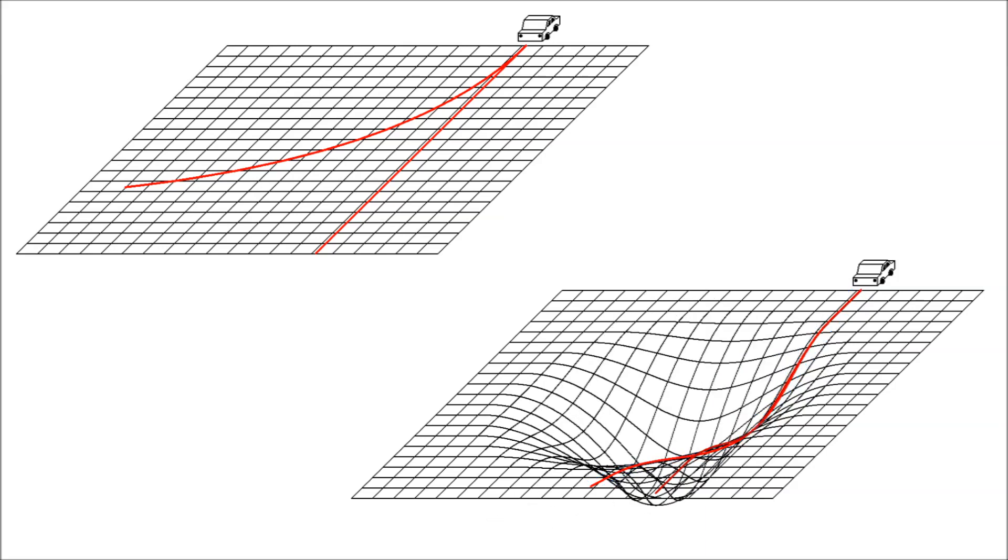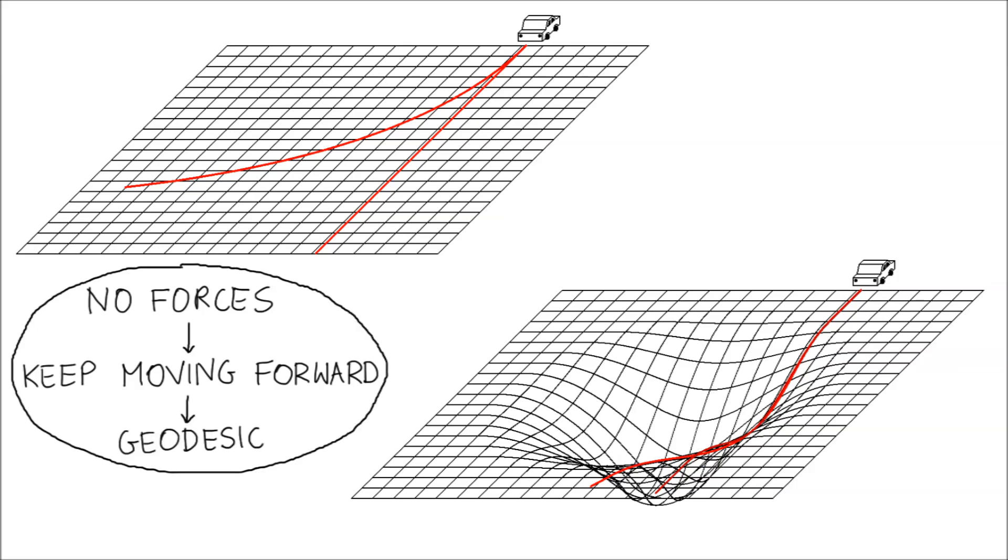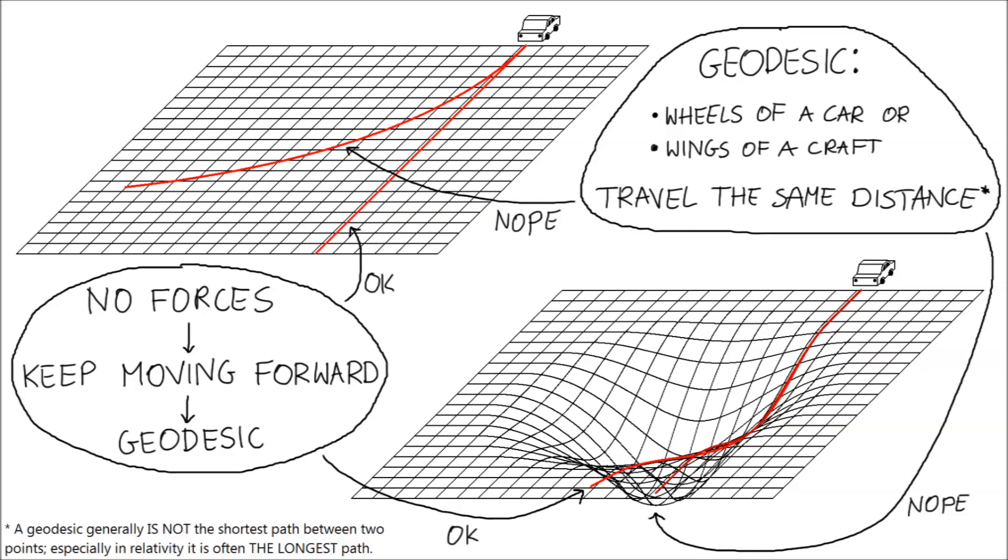This is a general rule of motion in physics. If there are no sideways forces on an object, it tries to go straight ahead and its path forms a curve called geodesic. If the space is flat, a geodesic is a straight line. But if the space is curved, a geodesic can also be curved. What characterizes a geodesic is that two connected objects moving on its opposite sides travel the same distance.